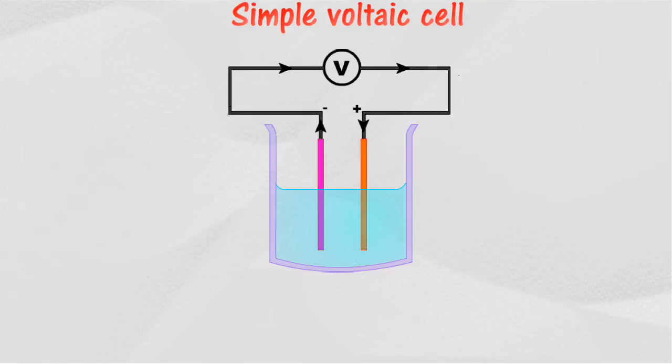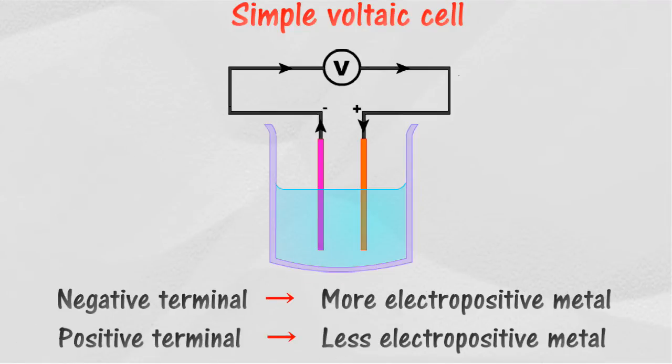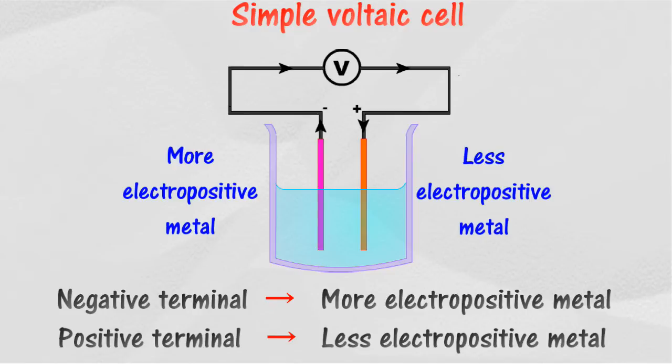Metals that are located higher in the electrochemical series act as negative terminal, while metals located lower in the electrochemical series act as positive terminal. Electrons flow from negative terminal through external circuit to the positive terminal.